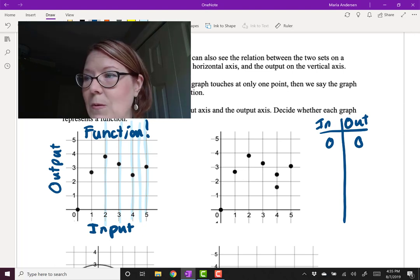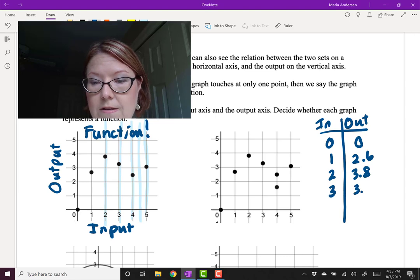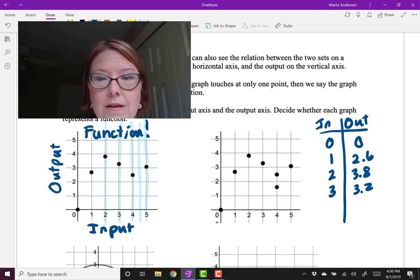So we have 0, 0. We have 1, 2.6. We have 2, 3.8. 3, 3.2. At 4,